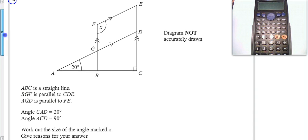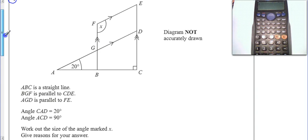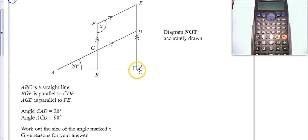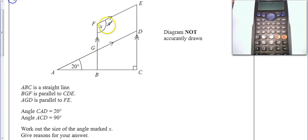So if we scroll down, we're basically asked to work out angle CA. We're given that CAD is 20 degrees, we're given that A to C to D is 90 degrees — we can see that from the box — and then we're asked to work out the angle X, and we need to give reasons for our answers.